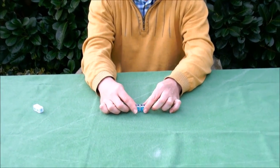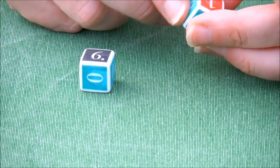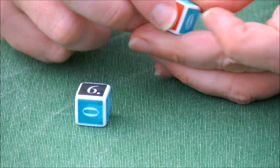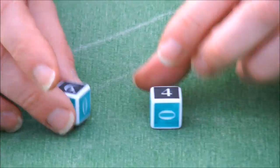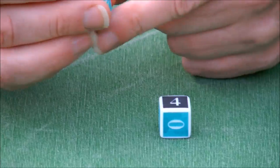Each of them has some numbers. So one of them has the number four, one, and a couple of zeros. And the other one has a six, a one, and a couple of zeros.